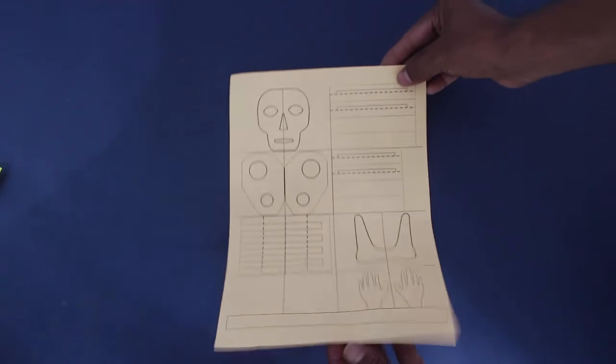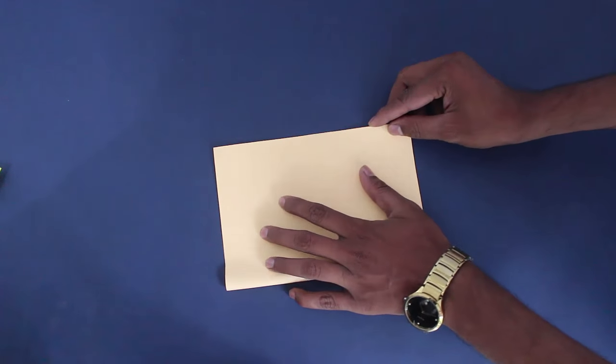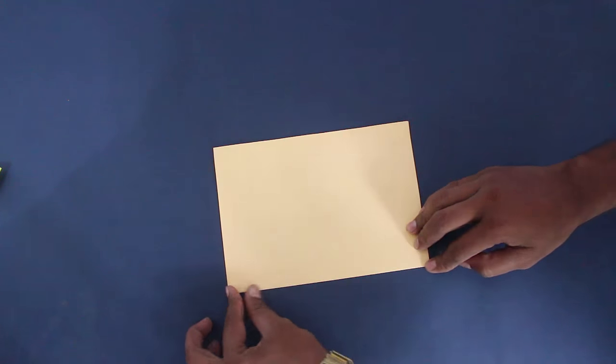This is the skeleton printout. First fold the paper in half and then in a quarter.